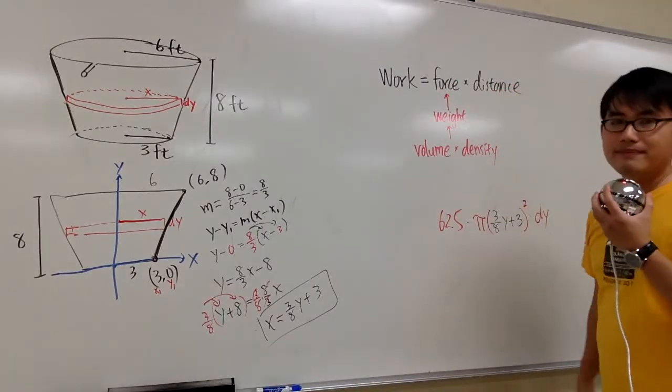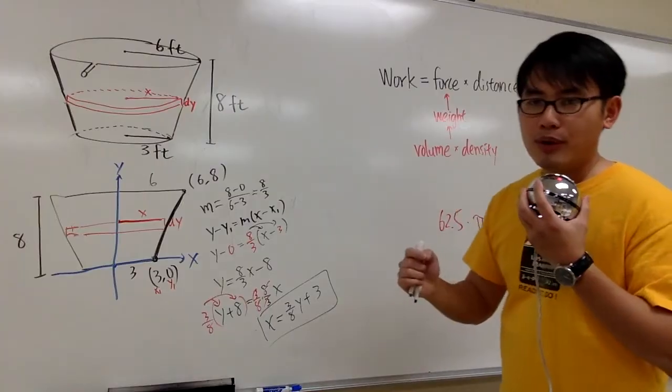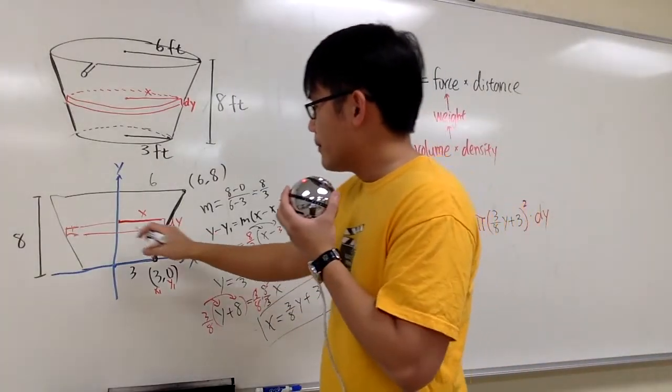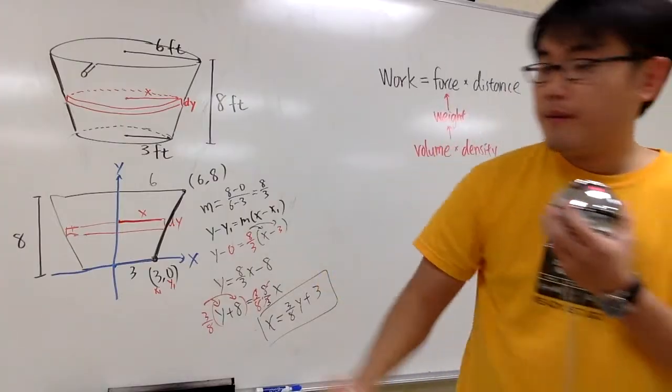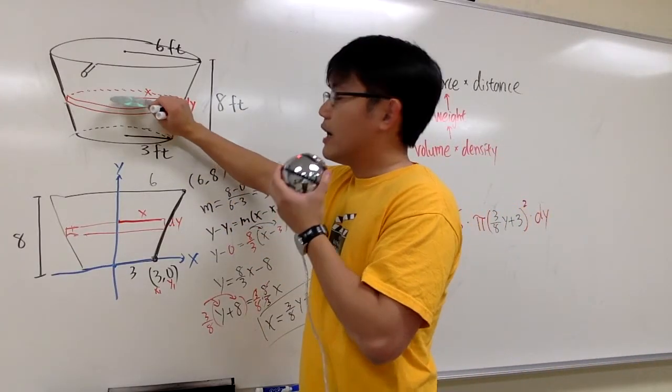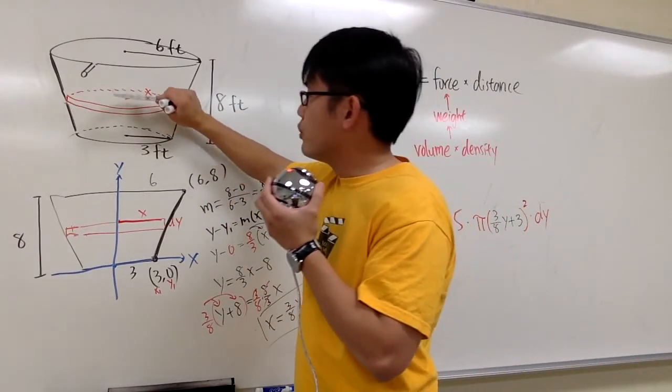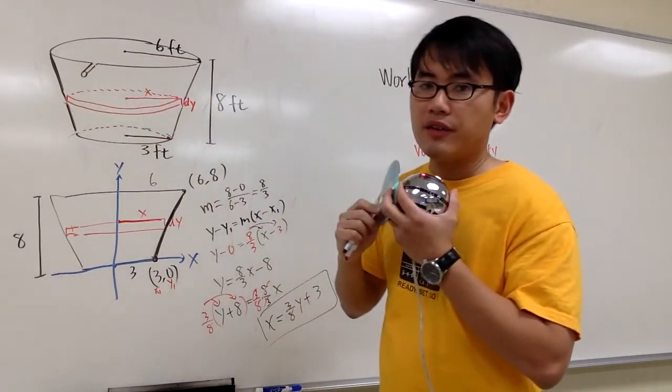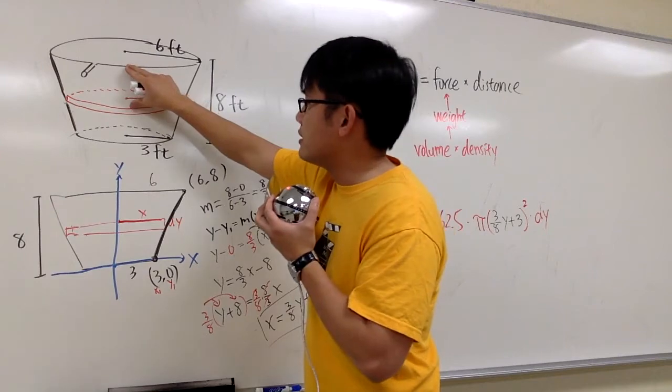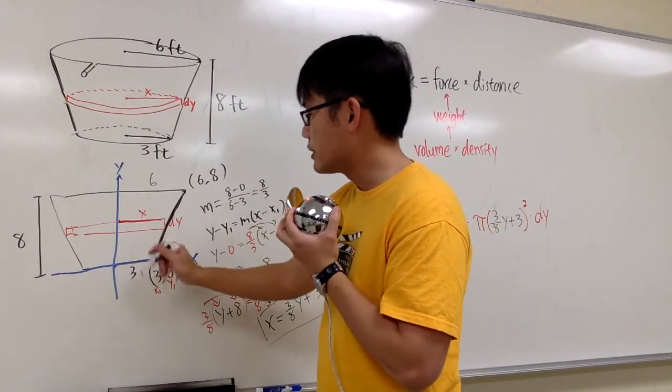Now we have to figure out the distance based on our labeling. Based on this picture, we have to ask ourselves, this is the disk. How far do we have to travel from here to here so I can pump out this disk of water out of the tank? We have to figure out this distance.